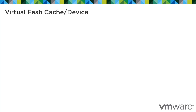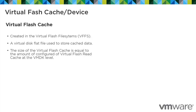There are two main components used to achieve virtual flash read caching. The Virtual Flash Cache is created in the virtual flash file system. It is a virtual disk flat file used to store cached data, and its size is equal to the amount of the configured virtual flash read cache at the VMDK level.